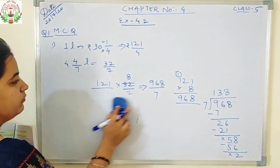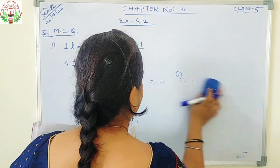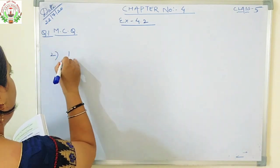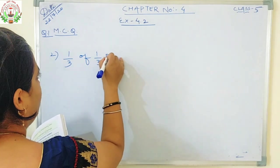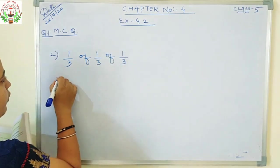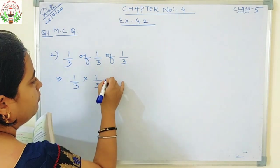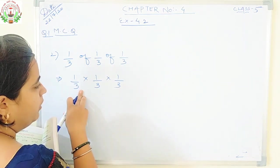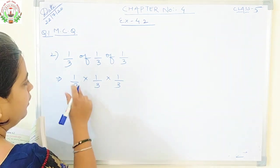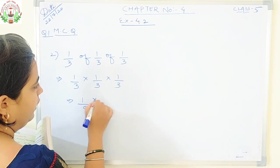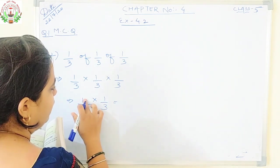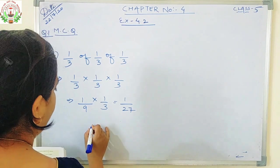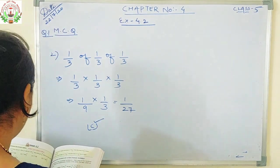Now question number 2: 1 by 3 of 1 by 3 of 1 by 3 of 1 by 3. You will replace 'of' with the multiplication sign: 1 by 3 into 1 by 3. We can't cancel numerator and denominator, so we multiply: 1 ones are 1, 3 threes are 9. Then again multiplied with 1 by 3 gives 1 upon 27. Answer is 1 upon 27, given in option number C.